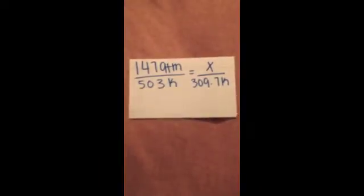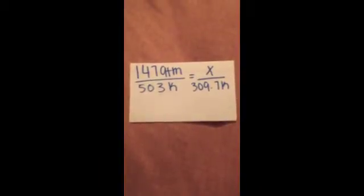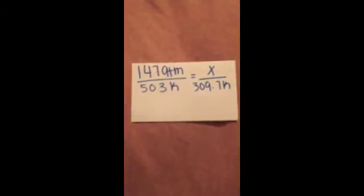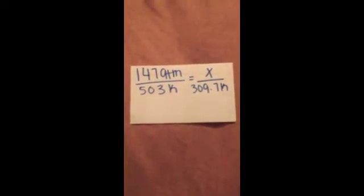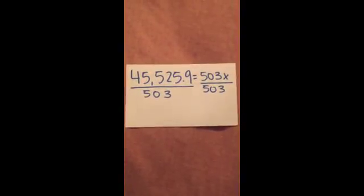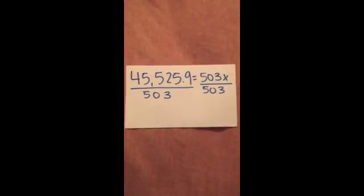Plug in all the numbers into the equation and 147 atm is over 503 kelvin equaling x which is our P2 over 309.7 kelvin. You cross multiply and you get 45,525.9 equals 503x.